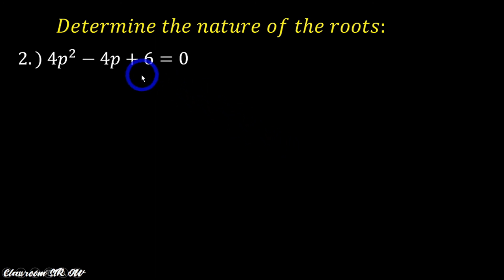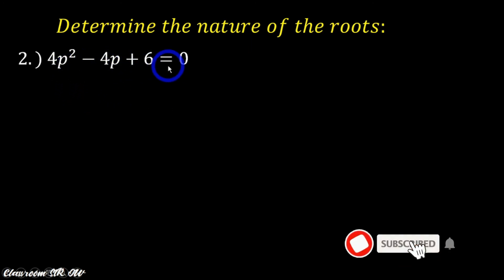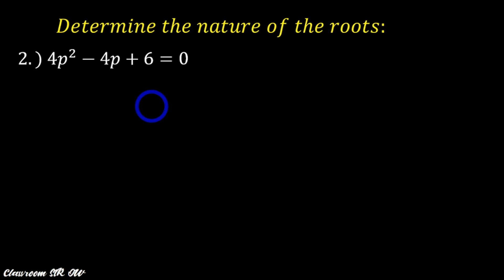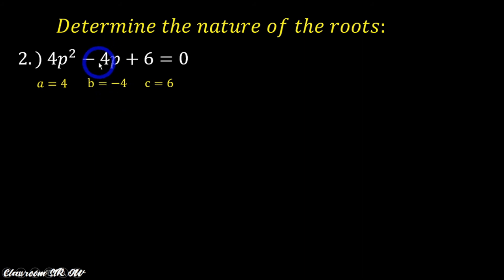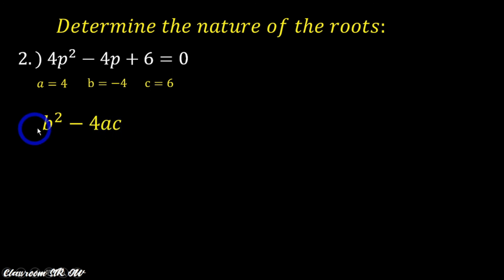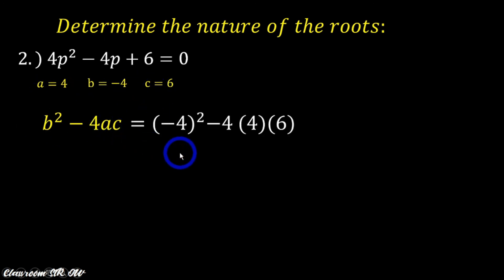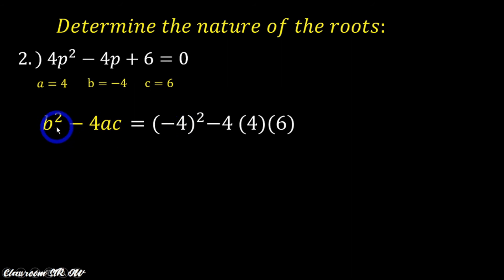Second example: we are asked to determine the nature of the roots of 4p squared minus 4p plus 6 equals 0. Our first step is to identify the values of a, b, and c. We have a is 4, b is negative 4, and c is 6. Using our discriminant b squared minus 4ac and replacing the variables, we have negative 4 squared. Be careful — the value of b is negative 4, so you must include the negative sign when squaring the value for b.